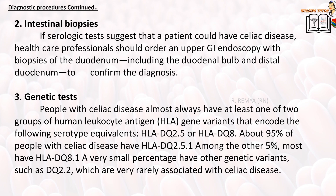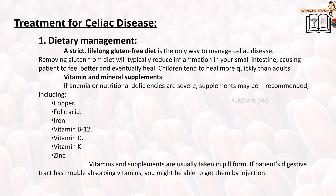Treatment for celiac disease — dietary management: a strict, lifelong gluten-free diet is the only way to manage celiac disease. Removing gluten from the diet will typically reduce inflammation in the small intestine, causing patients to feel better. Children tend to heal more quickly than adults.